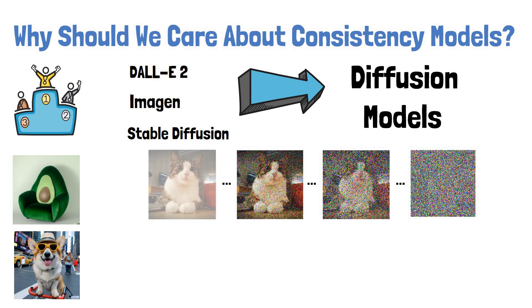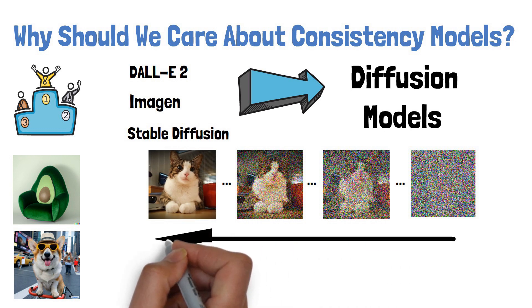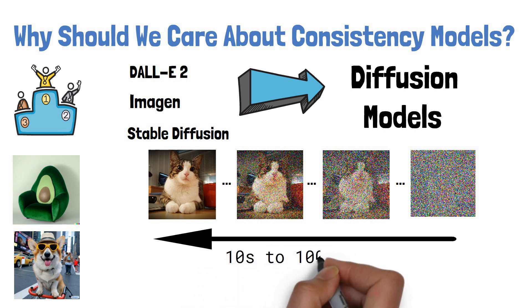Finally, we get this nice clear image of a cat. The drawback is that in order to generate a clear image we need to go through this process of gradually removing the noise, which can consist of tens to thousands of steps.